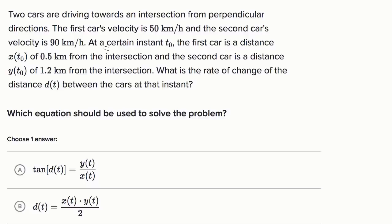the first car is a distance x(t₀) of half a kilometer from the intersection, and the second car is a distance y(t₀) of 1.2 kilometers from the intersection. What is the rate of change of the distance